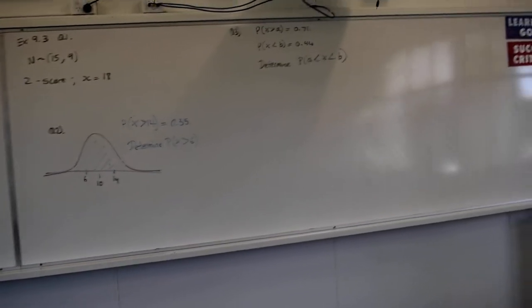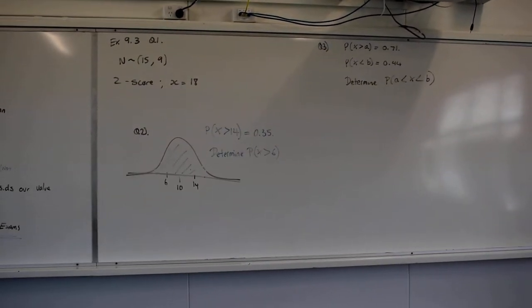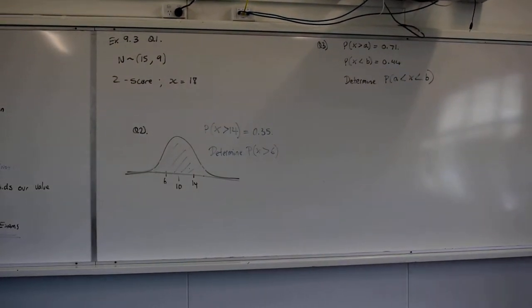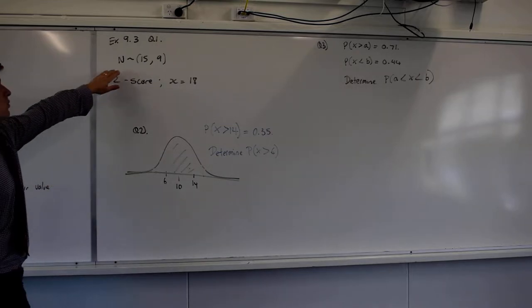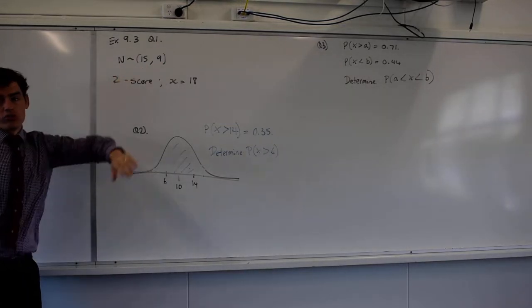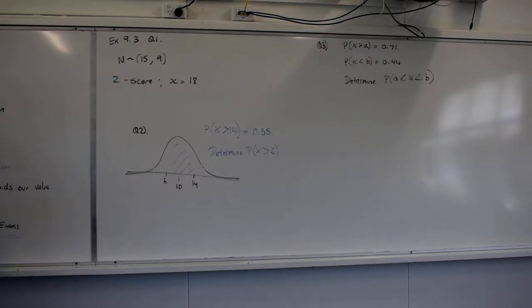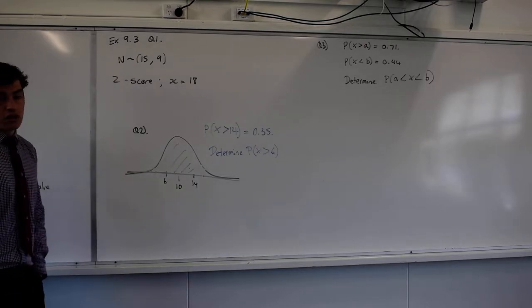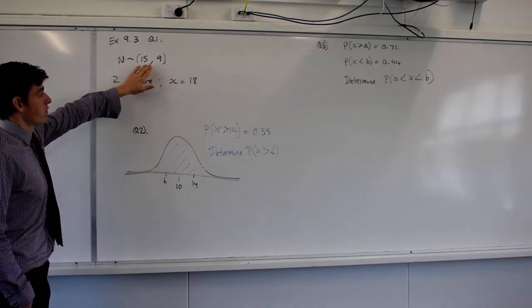So if you look at 9.3 question 1, we see that we have just here is a really simple convert this to a Z score. What does this tell us about my distribution? My mean is 15 and standard deviation is 3.